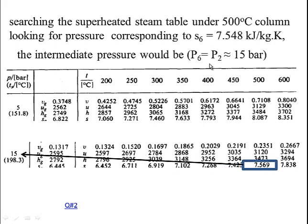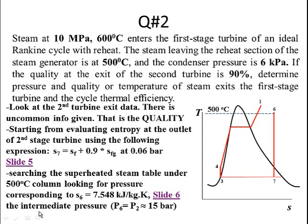We have now found the pressure of state 6. It is the same as the pressure of state 2, which is 15 bar. So the intermediate pressure is found to be 15 bar — one of the key requirements of the question. Therefore pressure at state 2 equals 15 bar.